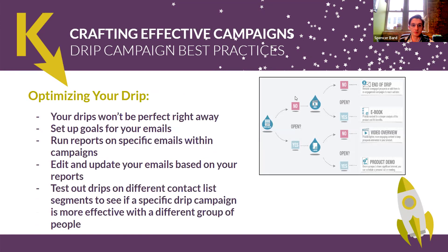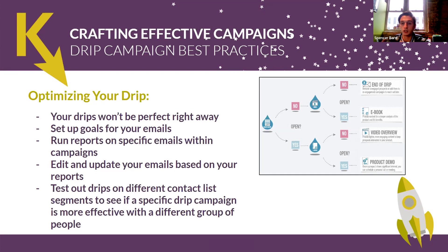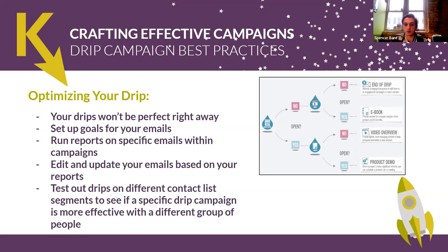Let's talk about optimizing your drips. With any marketing effort, it's not going to be perfect right away. You're going to want to set up goals for your emails and use your email marketing system's reporting to gauge analytics — how many people are opening it, are people going to the landing page. From there, use A/B testing to make edits and update your emails, or maybe adjust the frequency based on what the data is telling you. You'll also want to test your drips on different contact list segments to see if a specific campaign is more effective with a different group of people — to see what's resonating with certain people and how it can be optimized going forward.